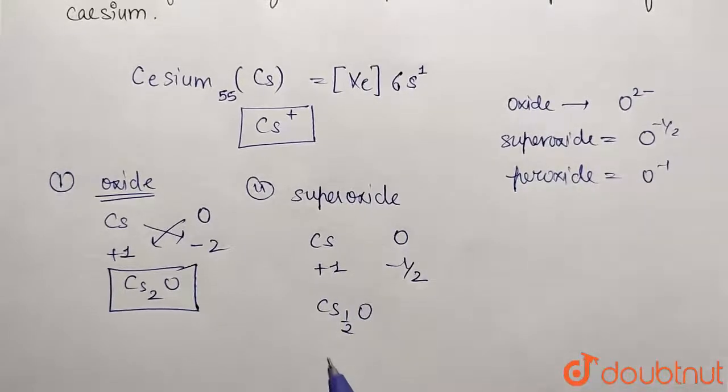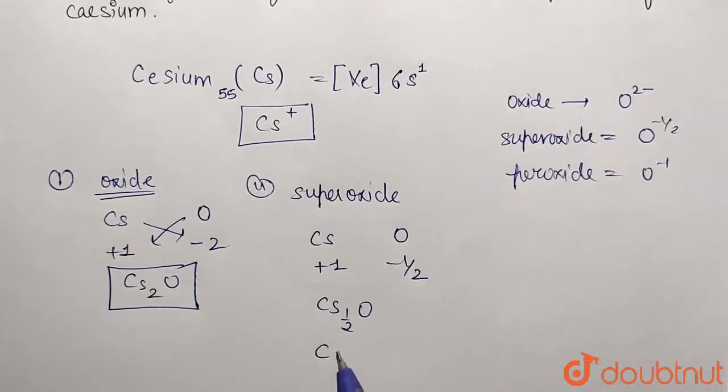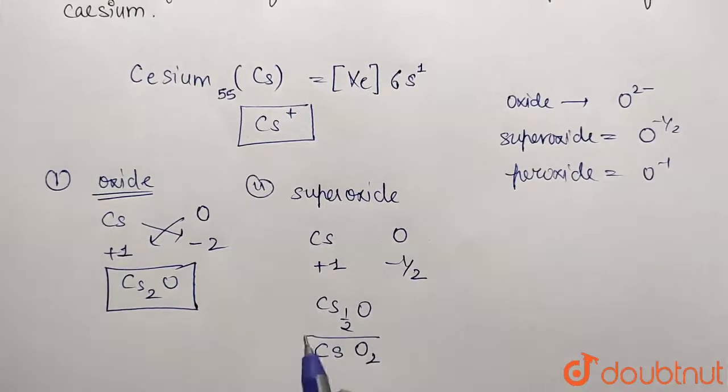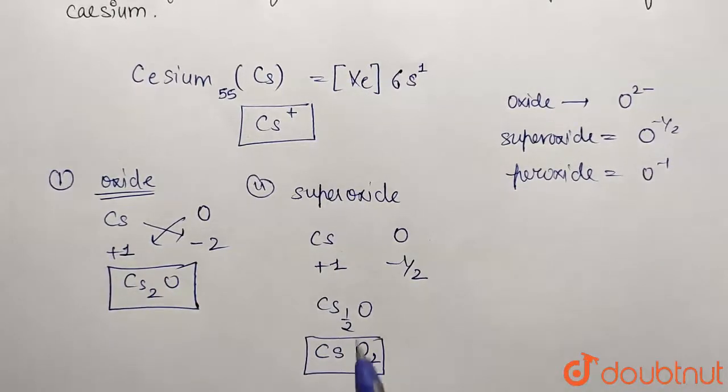This can also be written in the form of CsO₂, meaning the ratio will be the same. This is 1:2 ratio - we have taken 1/2, so it is 1 here. Cesium is 1, so this is 2. This is the general form.